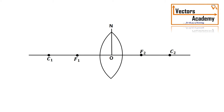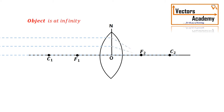If the object is placed at infinity, all the rays are parallel to the principal axis. Hence all the rays should pass through the focus on the other side. So if the object is placed on the left-hand side, the image formed will be on the right-hand side at the focus. As all the rays converge on the focus, the image is a point image and it is real.